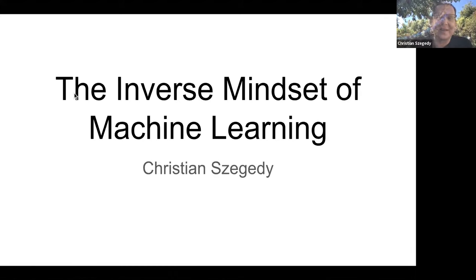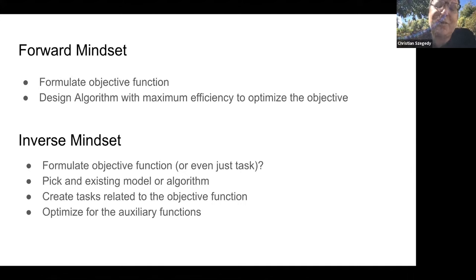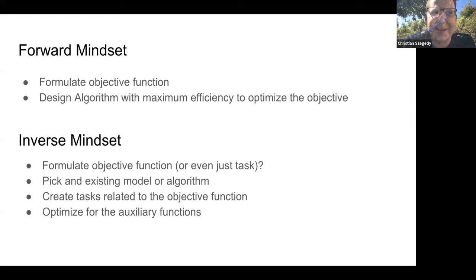I will talk about a point of view in machine learning and give several examples. I'll start with a few examples that most of you probably know, and then in the second half of the presentation, I'll give examples that are less obvious and more exciting. What is this whole thing about? I'm trying to contrast two things: one is the engineering mindset — the forward mindset — where you want to optimize some objective or train a model, design the best algorithm, and take the best neural network architecture or modify it to fit a problem.